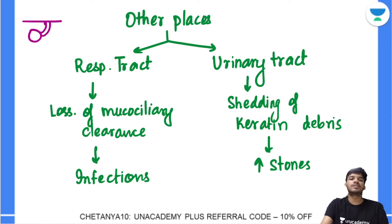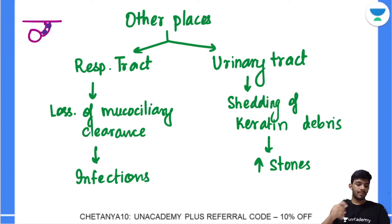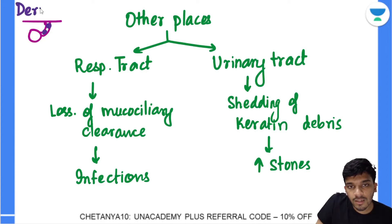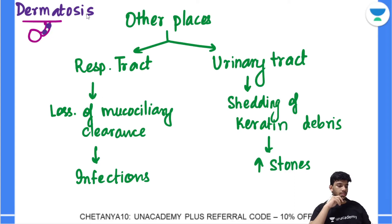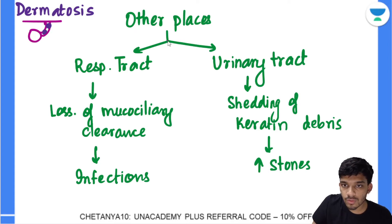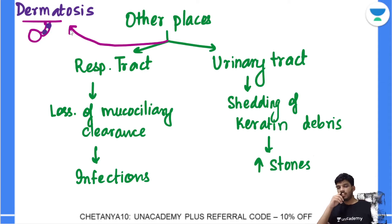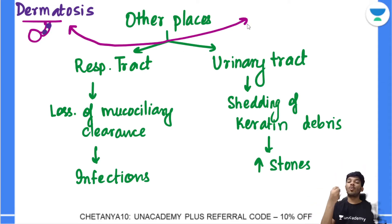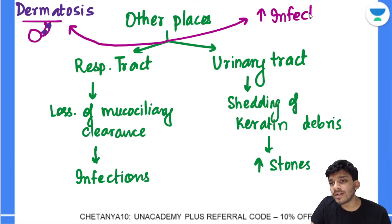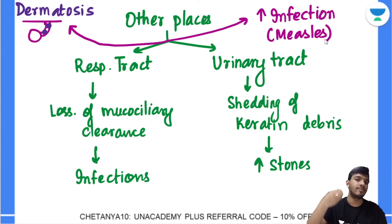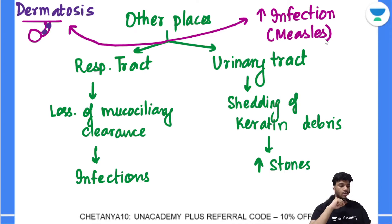Another area affected is the skin. There are sweat glands and sebaceous glands in the skin, and these glands get blocked due to keratin debris, leading to dermatological problems called dermatosis — due to plugging of the glands. Additionally, since Vitamin A is required for immunity, deficiency leads to increased infections, particularly correlated with measles. When giving the measles vaccination, Vitamin A is also given.